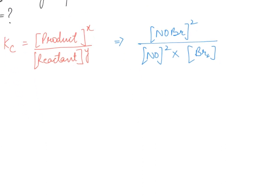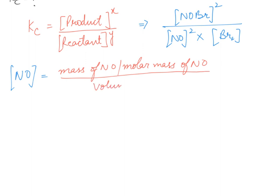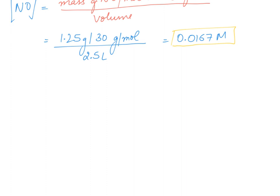We are given mass but need to find concentration. To find the concentration of NO, we use: mass of NO divided by molar mass of NO, divided by the volume of the reaction. Mass is 1.25 grams, molar mass is 30 grams per mole, and volume is 2.5 liters. This gives 0.0167 molar.